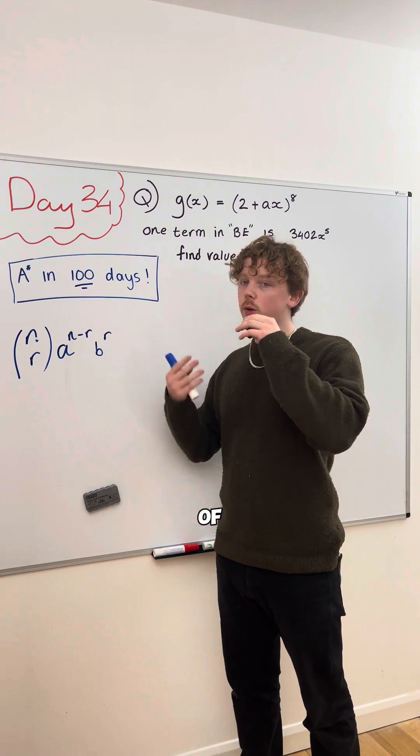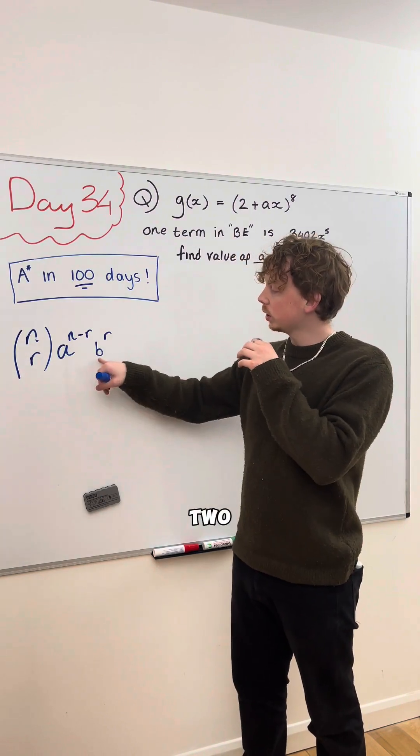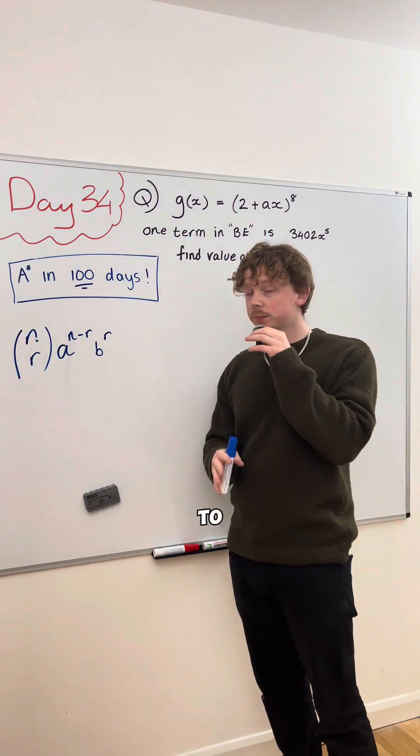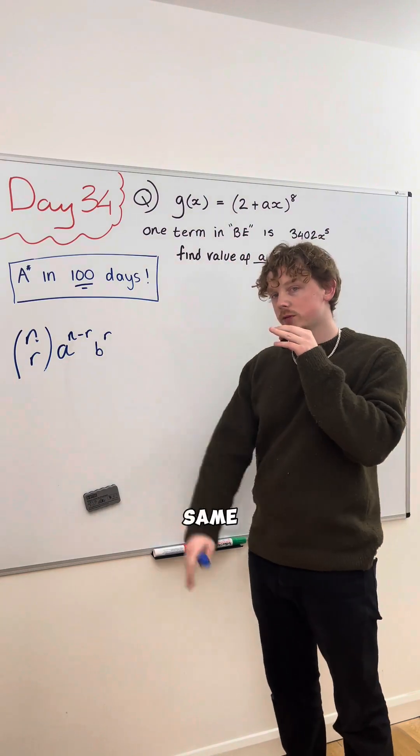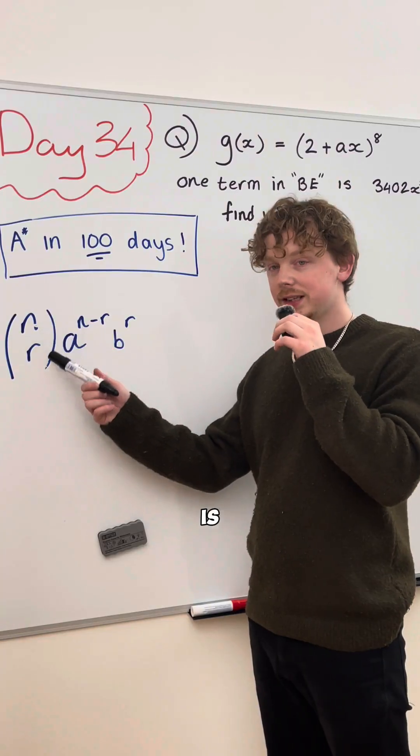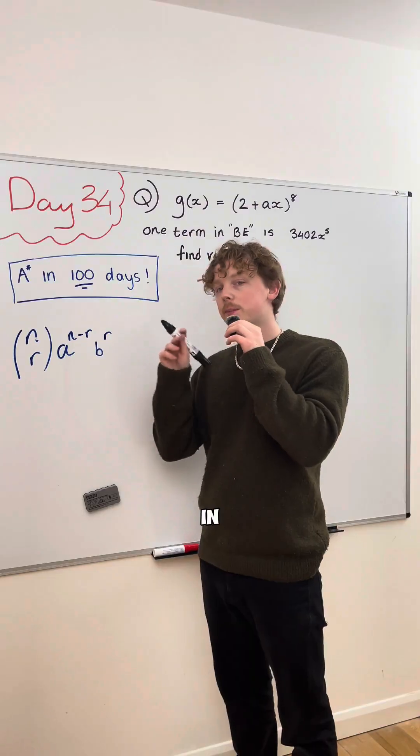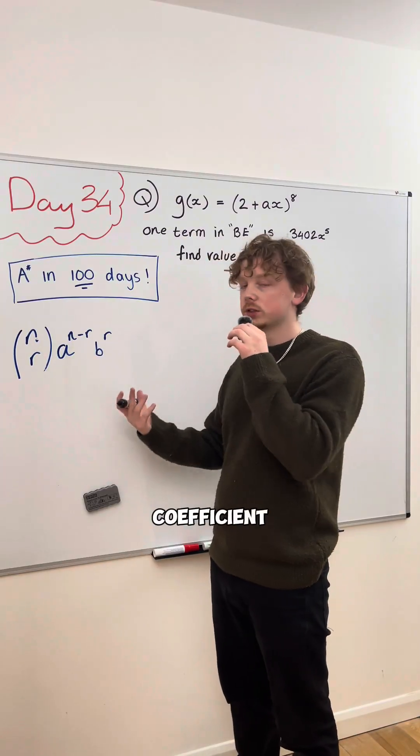This gives us the coefficient of each term, and these two represent this and this in our bracket. Not to be confused with this A and this A, not the same thing, where this is the nth row and this is the R-th term in Pascal's triangle, giving us the coefficient for those terms.